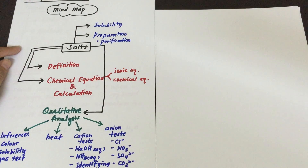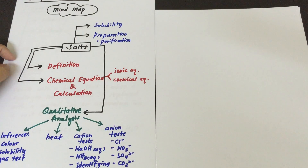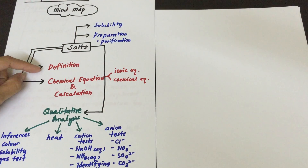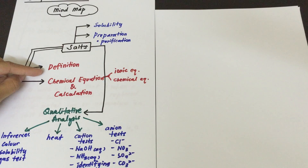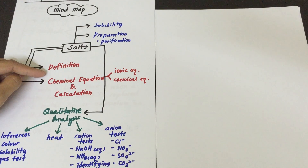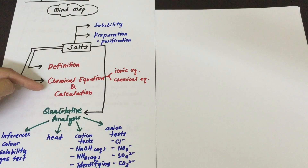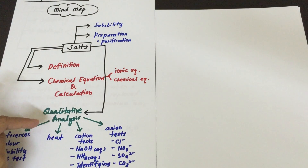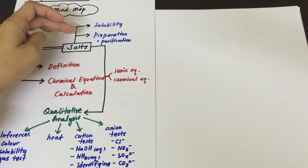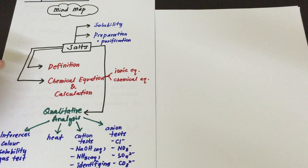Look at the mind map of the whole chapter — Chapter 8 Salt. First we need to know about the definition of salt, because this will lead to a deeper understanding on how to form the chemical equation and also the preparation of salt.